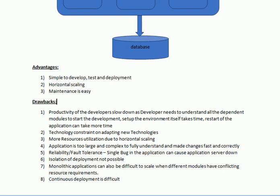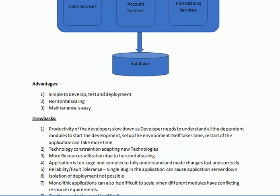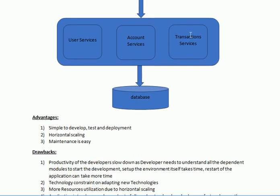The next disadvantage is more resource utilization due to horizontal scaling. Let us consider there are more users hitting the transaction services. In a monolithic application you cannot allocate resources for a particular component — if you want to add resources you have to add them for the complete application as one instance. You cannot prioritize resources for a particular service or reduce resources for another service.